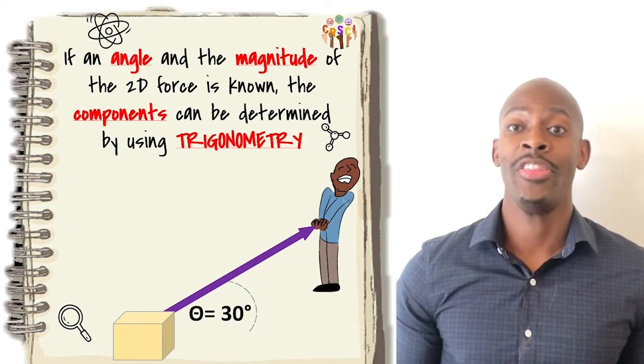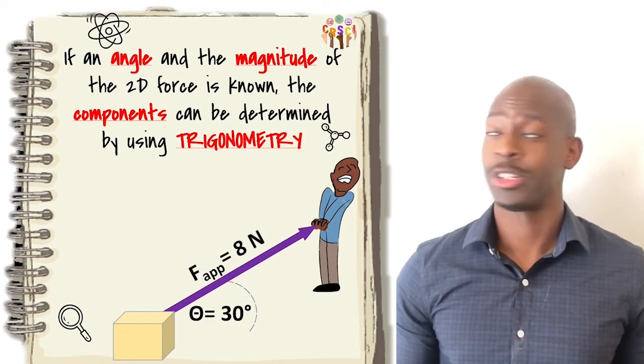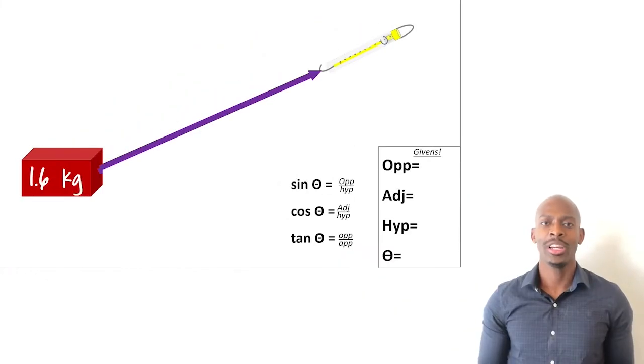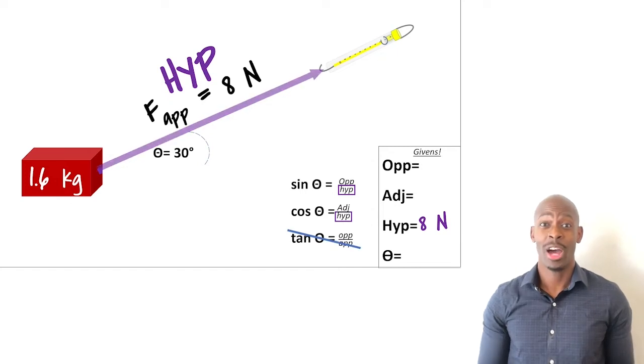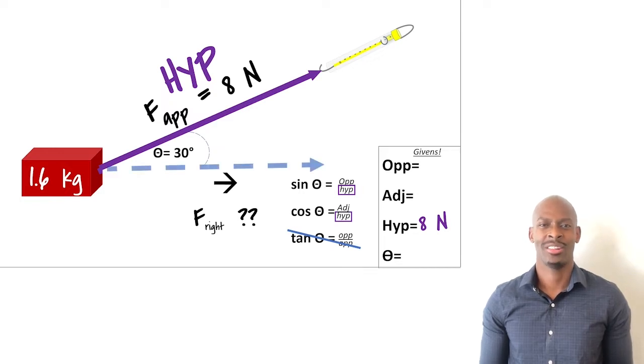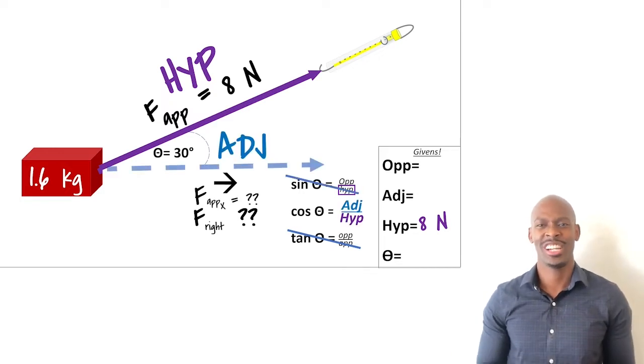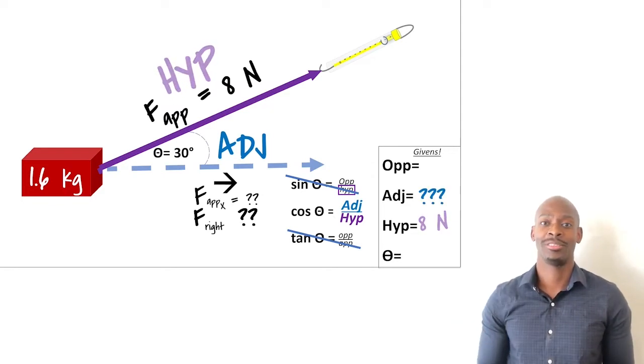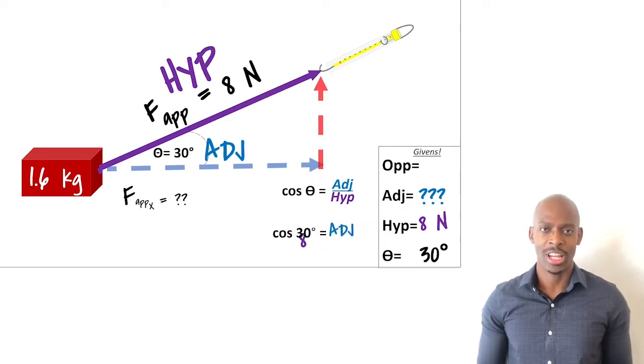If you know an angle and the magnitude of the force, you can use trigonometry. Since I'm pulling 8 newtons at a 30-degree angle, that's my hypotenuse. And if I want to figure out how much of this force is acting to the right, or on the x-axis, that's my adjacent side. I need to solve for the adjacent since I have the hypotenuse. And theta is 30 degrees. So we're going to do 8 times the cosine of 30 degrees to figure out our adjacent side.